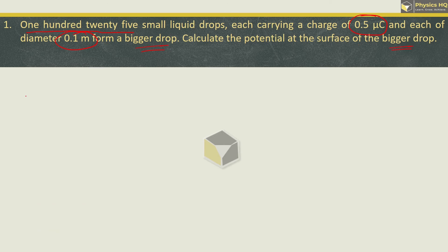To find potential, the simple formula is: potential on the bigger drop equals charge Q divided by 4 pi epsilon naught into the radius of the bigger drop.